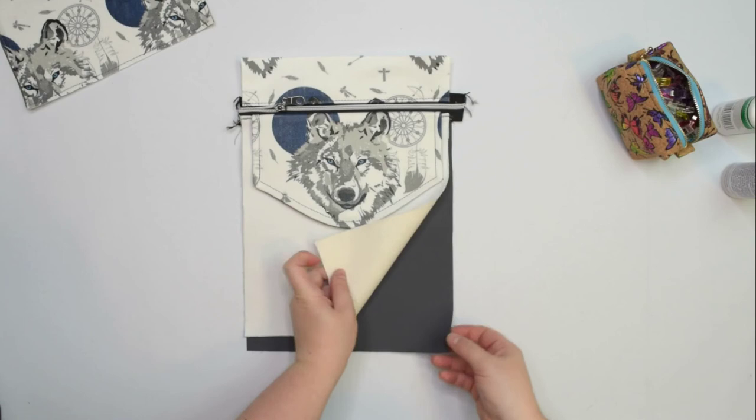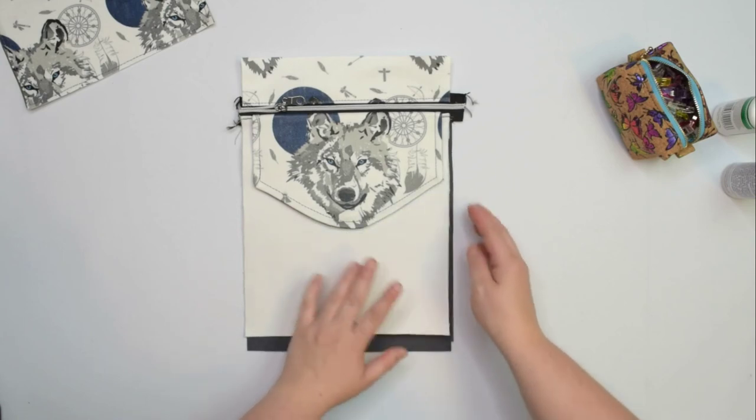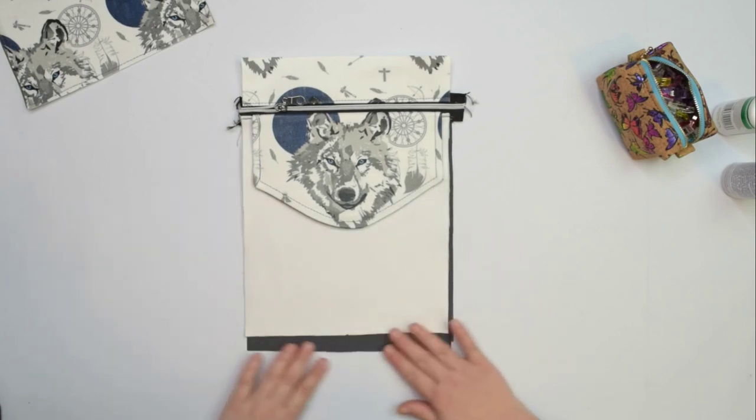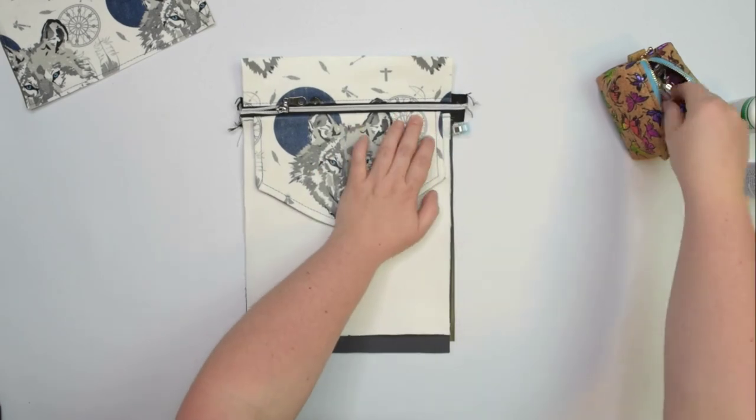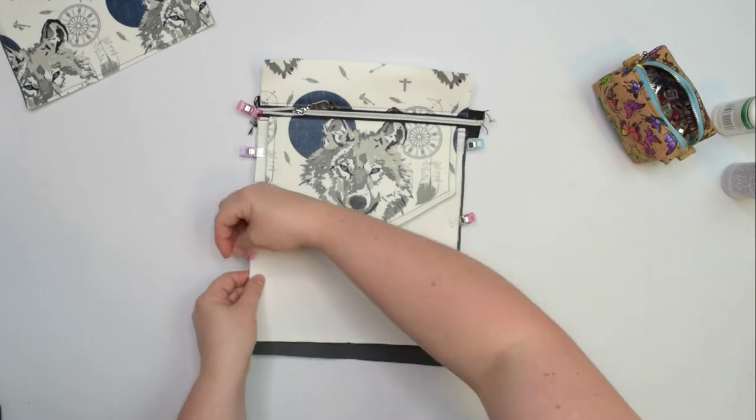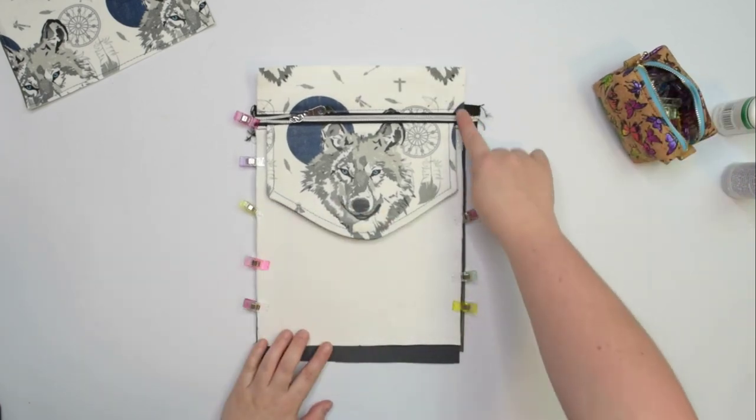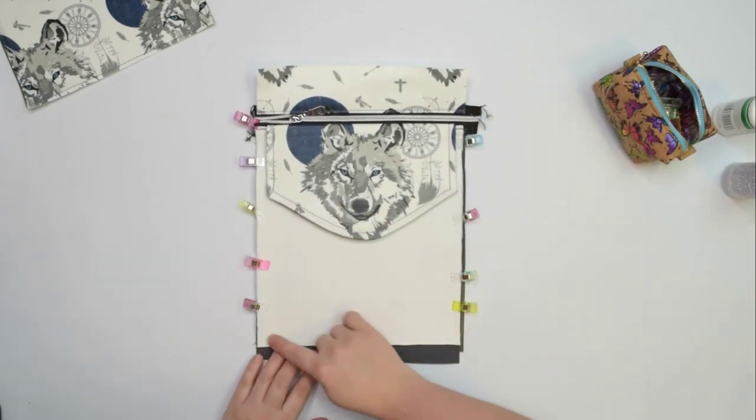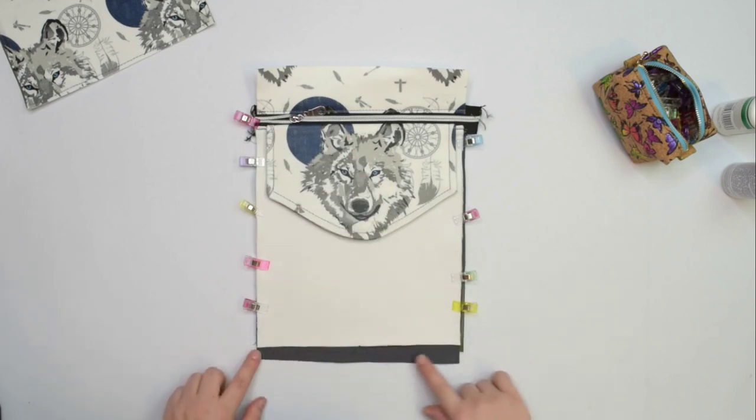You have 3 pieces of fabric here and we need to line them up along the sides. Do not worry about the bottom edge, because we are going to trim it off in a minute. We're going to baste everything on all 3 sides. After that, we can trim off the excess fabric at the bottom.